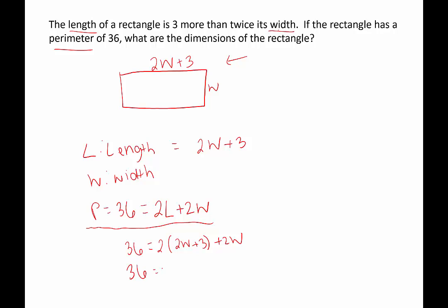So this is 36 equals 4W plus 6 plus 2W. I'll combine like terms. 4W plus 2W is 6W, so we have 6W plus 6. Subtract 6 from both sides, and we get 30 equals 6W. Divide both sides by 6, and we get 5 is equal to the width.